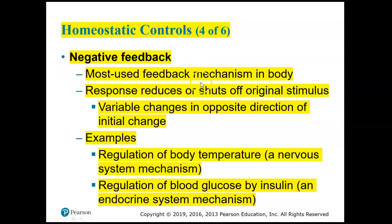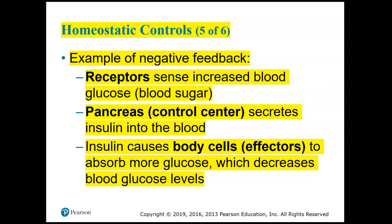Negative feedback is the most used feedback mechanism in the body. The response reduces or shuts off the original stimulus, and the variable will change in the opposite direction — that's where the word 'negative' comes from. For example, an increase in body temperature leads to a response that decreases body temperature. Regulation of body temperature and regulation of blood glucose are both examples maintained by negative feedback.